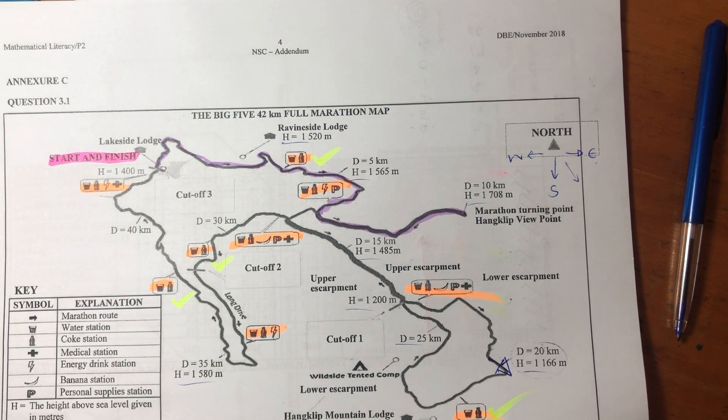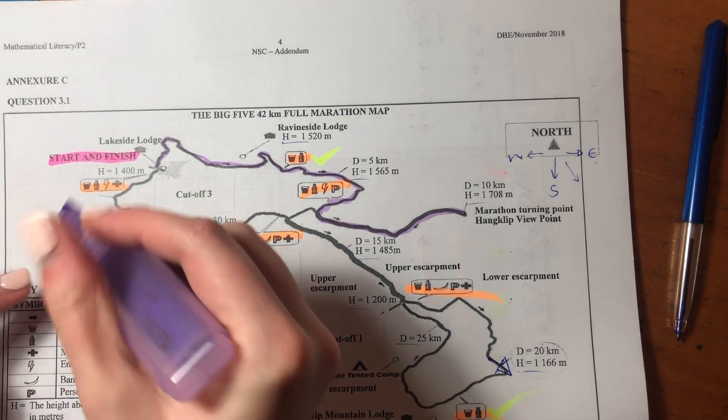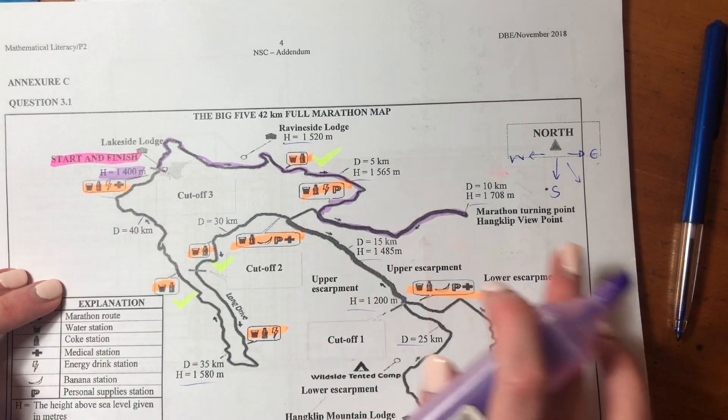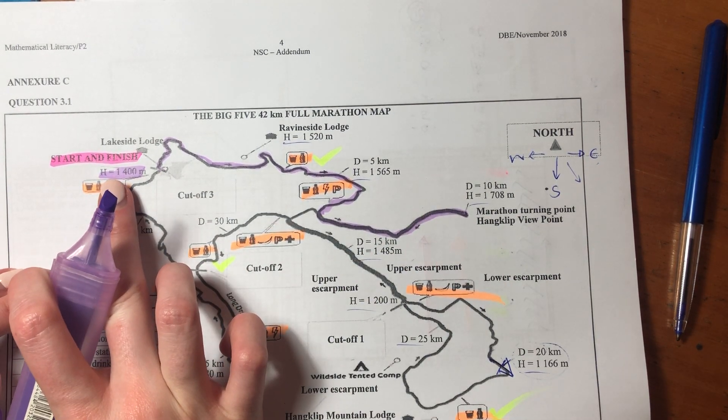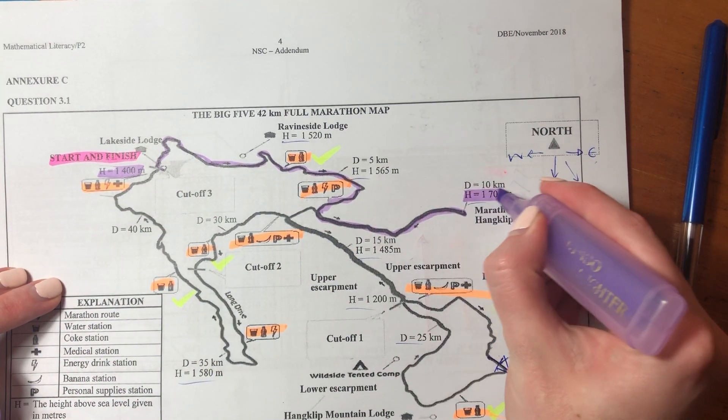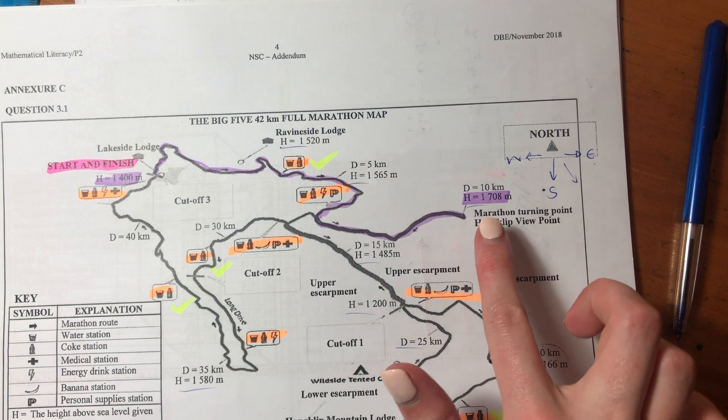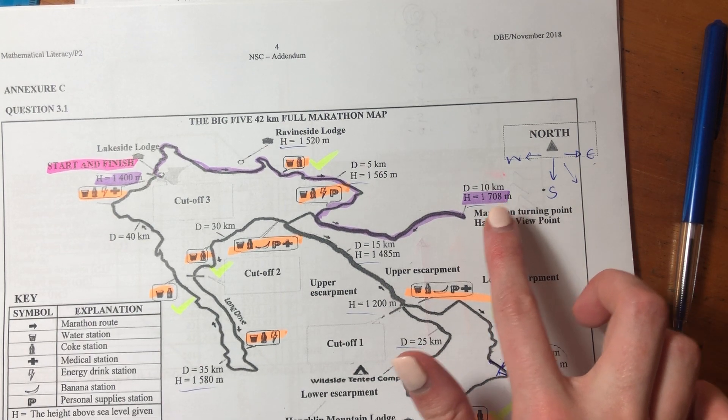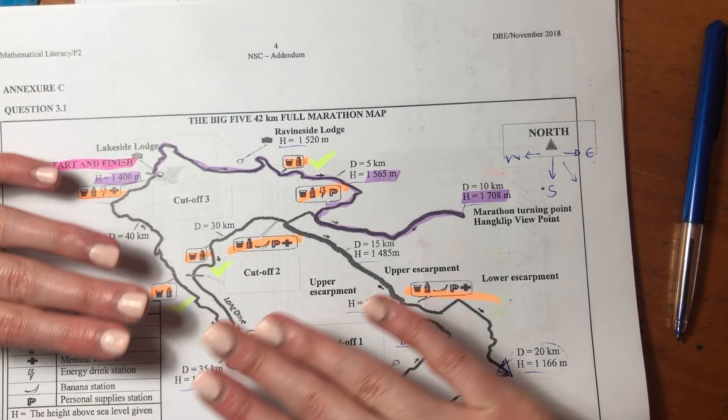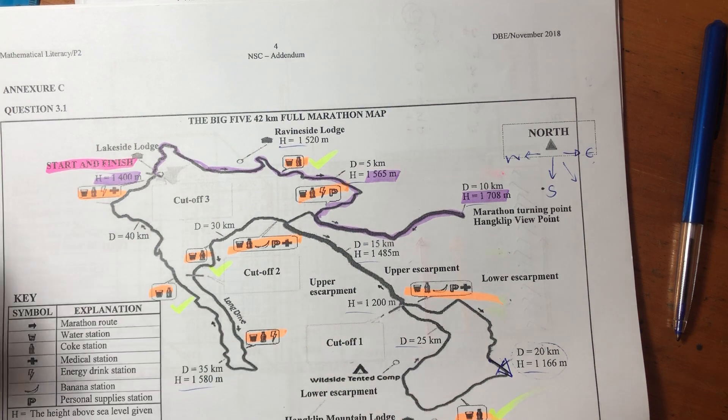So do you see when he starts, the height that he starts at, or she—it doesn't have to be a man—he starts at 1,400 meters above sea level. And by the time he gets to 10 kilometers, he is 1,708 meters above. At the five kilometers, he's 1,565 meters above. So he starts quite low and he's running uphill.